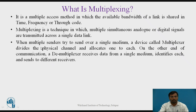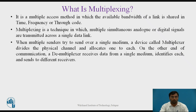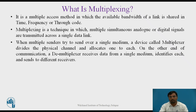What is multiplexing? It is a multiple access method in which the available bandwidth of a link is shared in time, frequency, or through code. That is, the available spectrum is divided into different channels, which can be used by different stations with different characteristics like time, frequency, or code assigned to each station transmitting data on the spectrum.